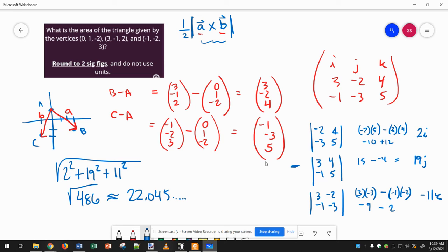But that's the parallelogram. So I just cut that in half to get the triangle. And for this problem, I said to round to two sig figs because it comes out a little bit nicer, 11. So there you go.